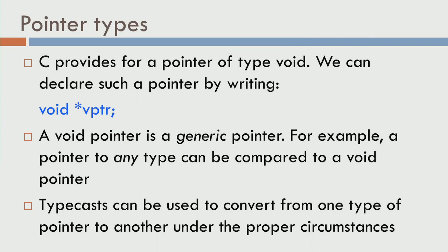Another subtle thing in C is that it provides a pointer of type void. You declare it by saying void star vptr, and this void pointer is actually a generic pointer — it can be made to point at anything. So far we saw integer star pointers; you could also have float star ptr1 and so on. But void star vptr is generic: you can make it point to an integer, a floating point, a character, or even to a pointer itself. This is very handy and we will see it in detail later.